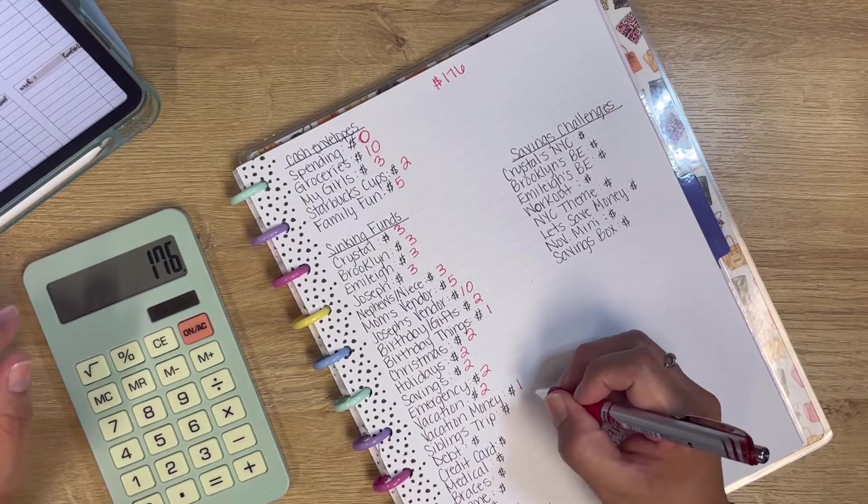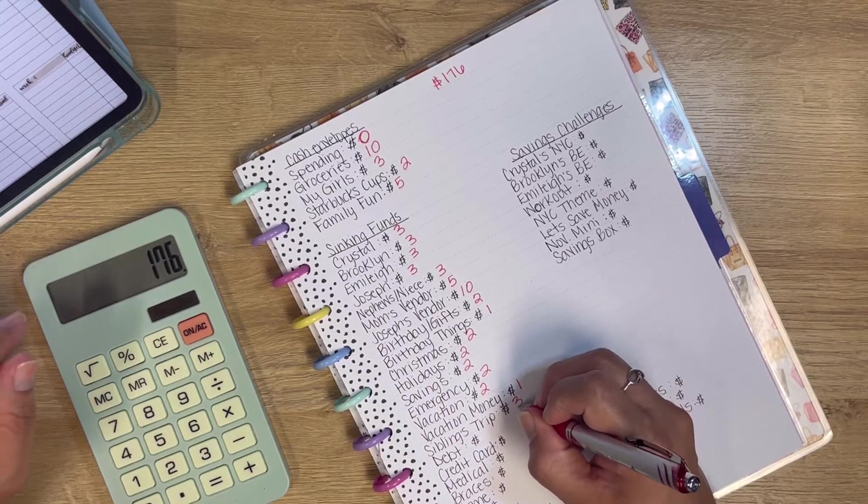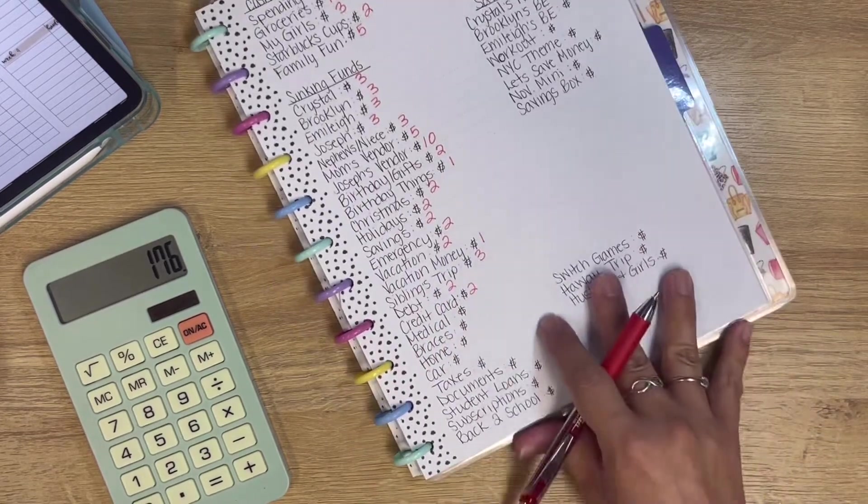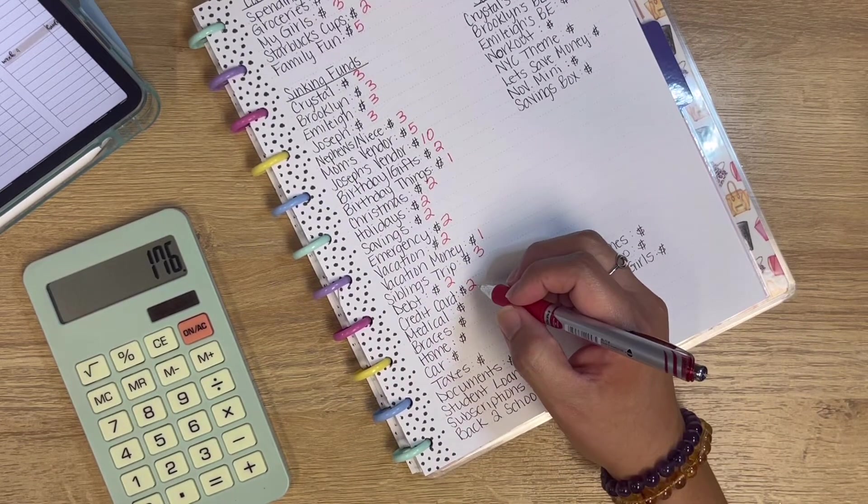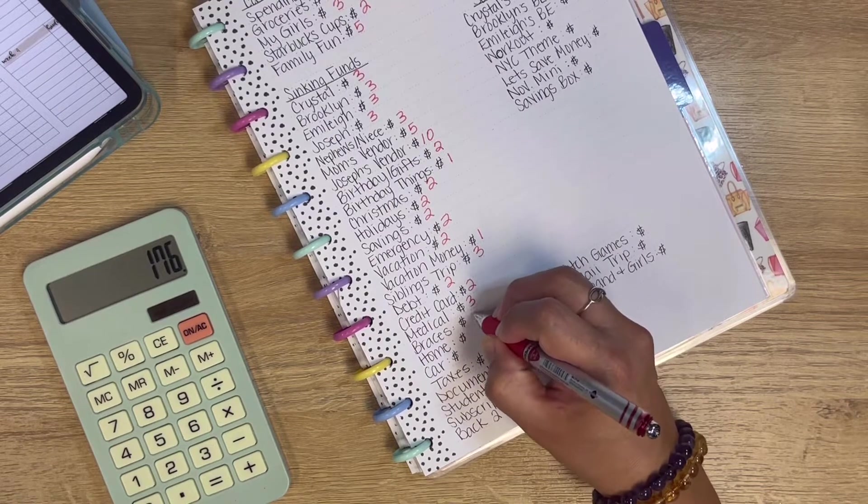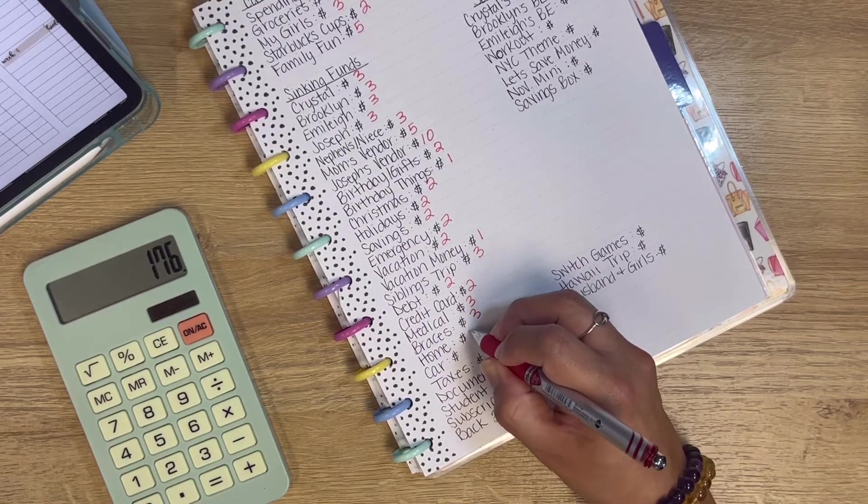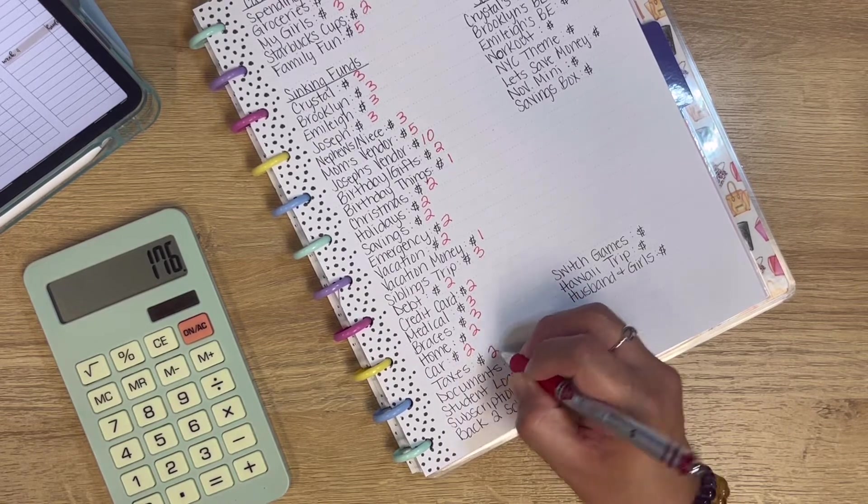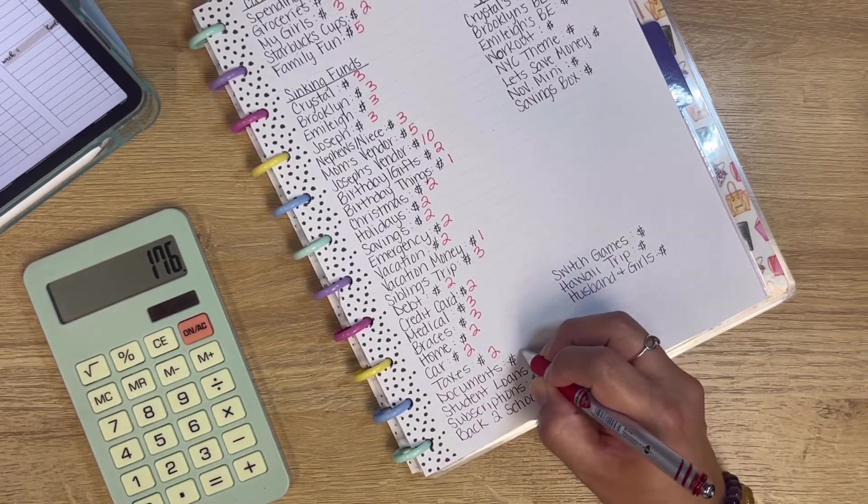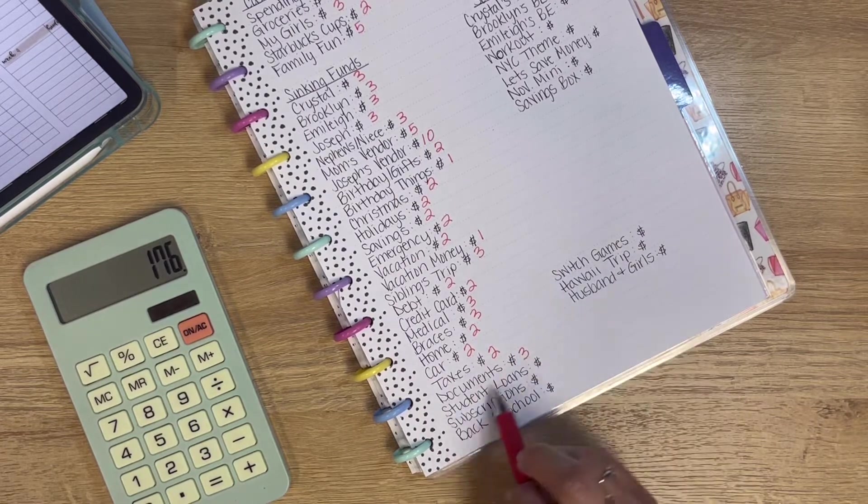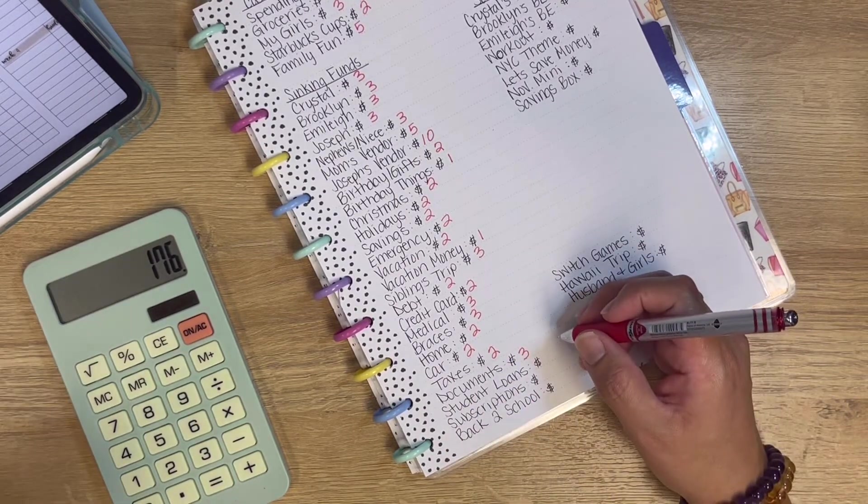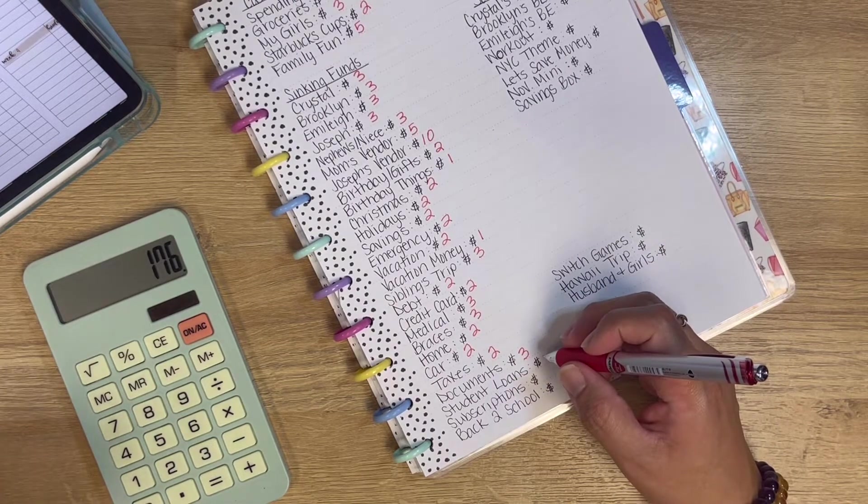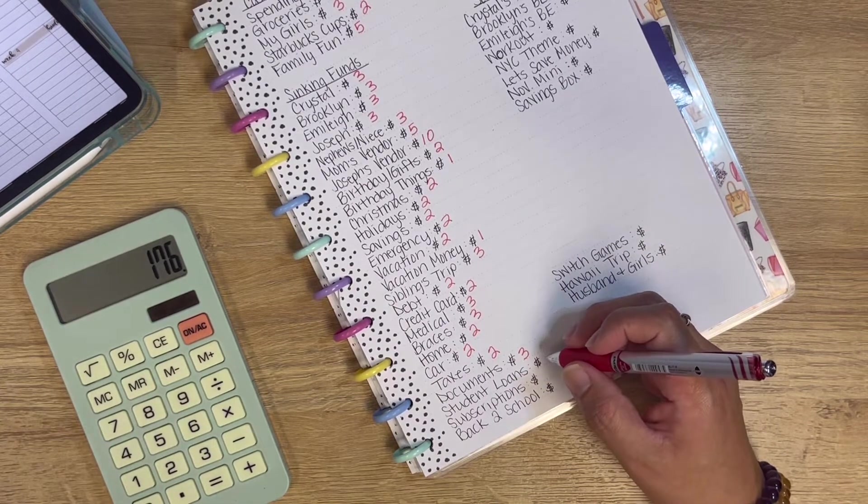So vacation money, we're adding $1. Siblings trip, $3. Debt and credit card, we're adding $2. Medical, $3. Braces, $3. Home, $2. Car, $2. Taxes, $2. Documents, $3. And I believe we have enough to get my daughter's, both my daughters', passport. So we're planning to do that in the next few weeks, hopefully.